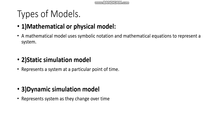The third type is called dynamic simulation model. A dynamic simulation model represents the system as it changes over time. As we move forward or backward in the time scale, there are points where the objects and the interactions change, and the dynamic simulation model represents these kinds of changes.